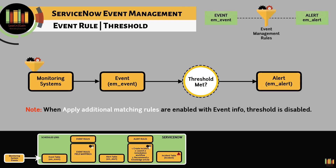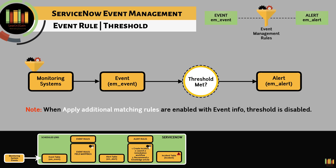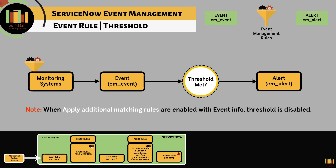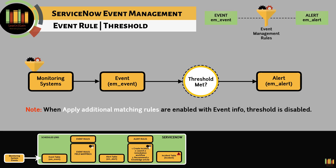Let's take a look at an example. We have disk space events configured on a D drive within a Windows server. We do not want the operations team to be notified until the disk space is less than 400 megabytes. Similar configurations can be enabled within the monitoring system too, but let's take a look at how this can be achieved through event rules.